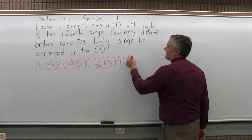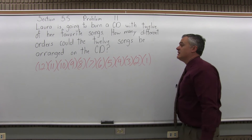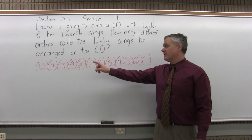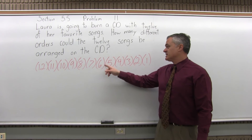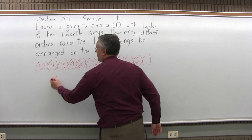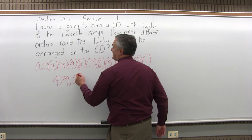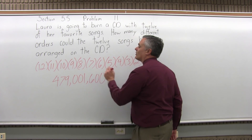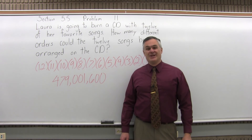Until you're down to the very last one, number 12, there should be only one song left. And you would multiply all these numbers out: 12 times 11 times 10 times 9 times 8 times 7 times 6 times 5 times 4 times 3 times 2 times 1. If you multiply all those numbers out, it comes out to 479,001,600 different ways you could order 12 songs on a CD.